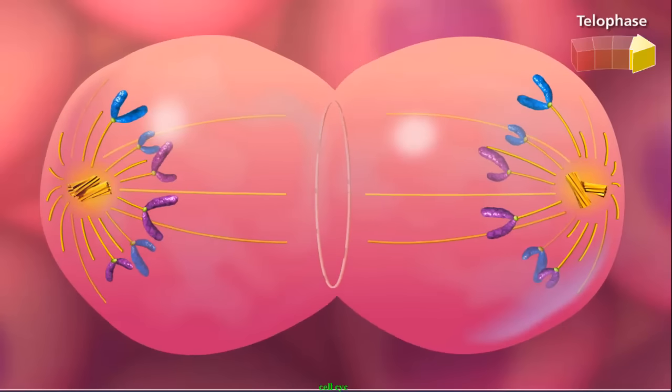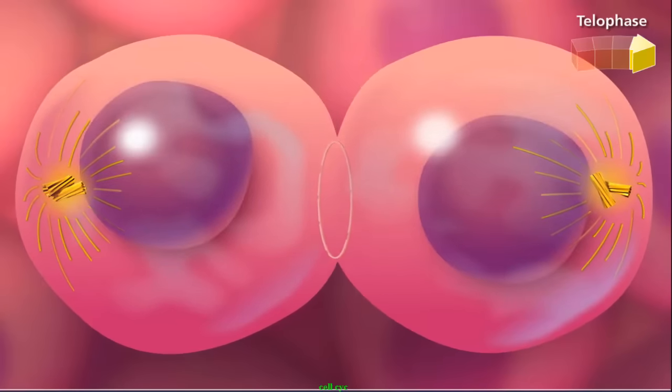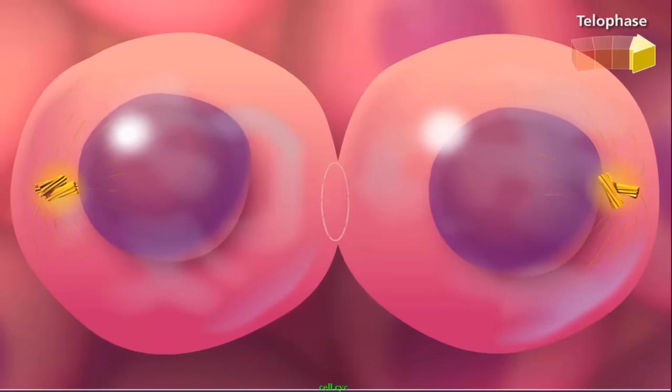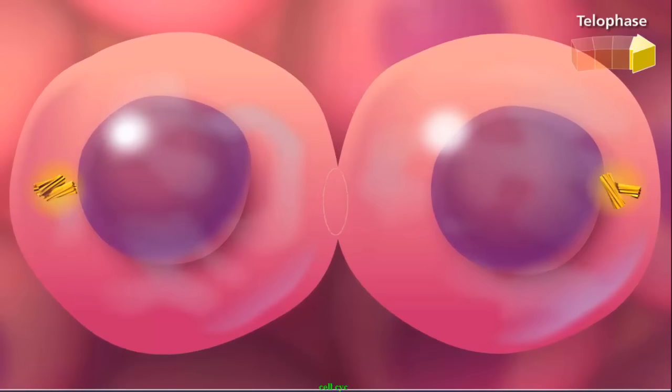Chromosomes cluster at opposite poles and begin decondensing as the nuclear envelope reforms around them. The spindle apparatus disassembles as the microtubules are broken down into tubulin monomers that can be used to form the cytoskeleton of the daughter cells.